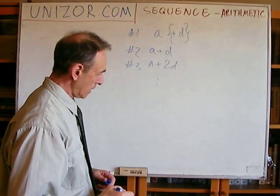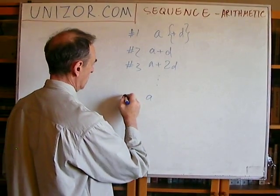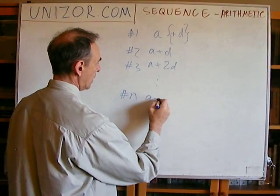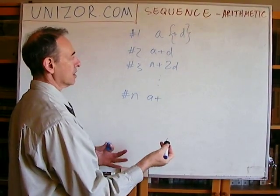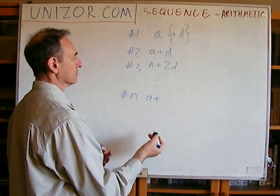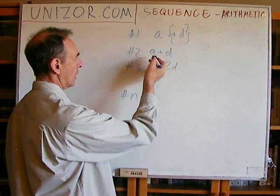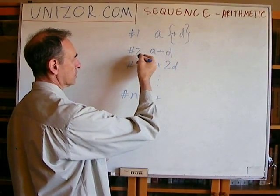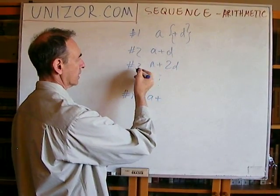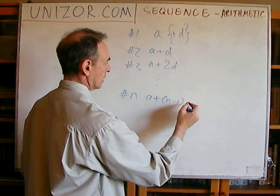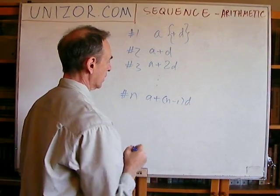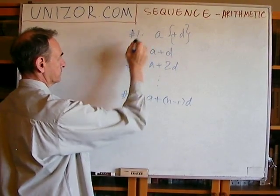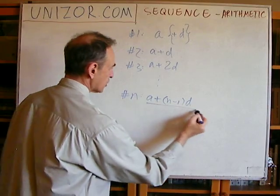As you probably guess, element number N would be A plus however many times we have added D to our initial element. Once to get to element two, two times to get to element three, and obviously N minus one times to get to element number N. So this is the general formula.